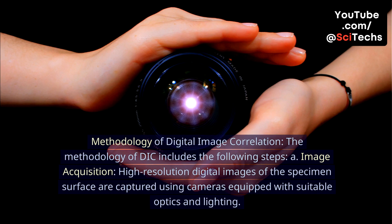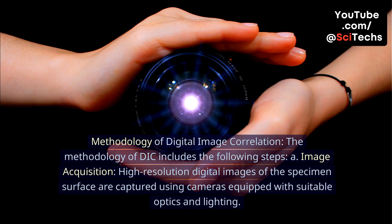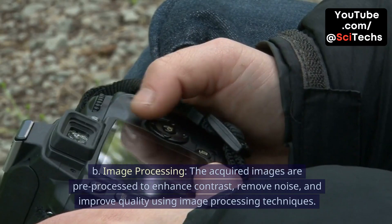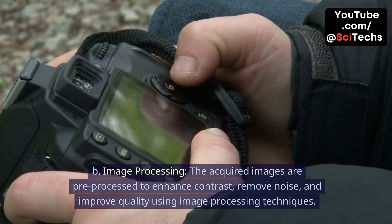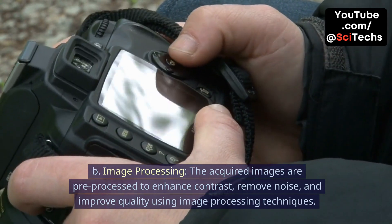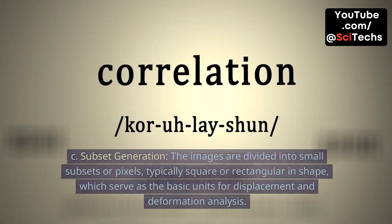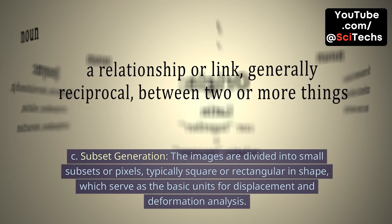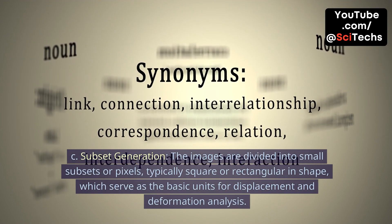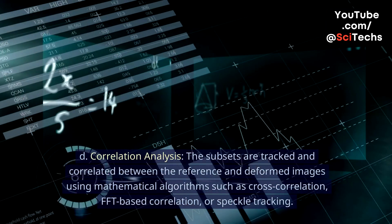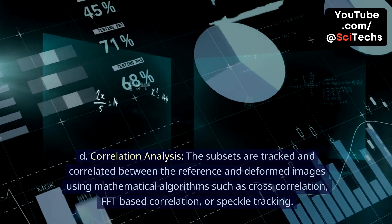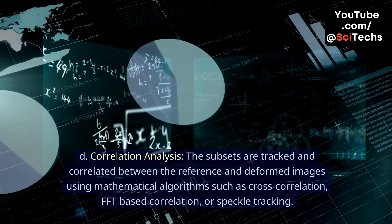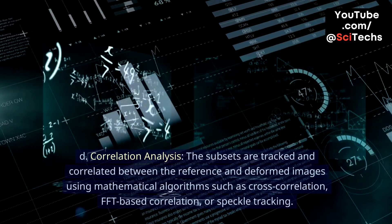Methodology of Digital Image Correlation. The methodology of DIC includes the following steps. A. Image Acquisition: High-resolution digital images of the specimen surface are captured using cameras equipped with suitable optics and lighting. B. Image Processing: The acquired images are pre-processed to enhance contrast, remove noise, and improve quality using image processing techniques. C. Subset Generation: The images are divided into small subsets or pixels, typically square or rectangular in shape, which serve as the basic units for displacement and deformation analysis. D. Correlation Analysis: The subsets are tracked and correlated between the reference and deformed images using mathematical algorithms such as cross-correlation, FFT-based correlation, or speckle tracking.